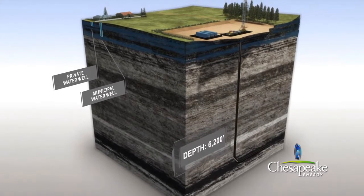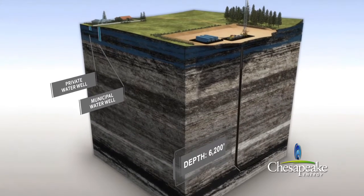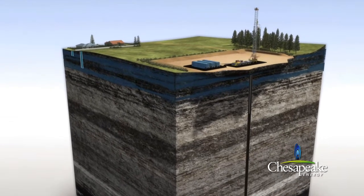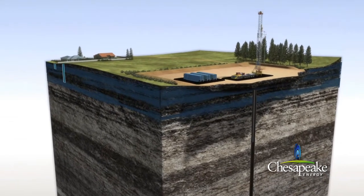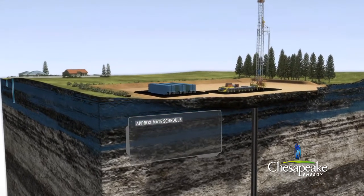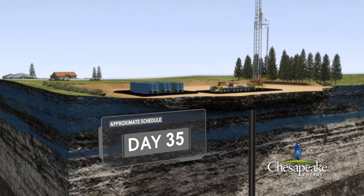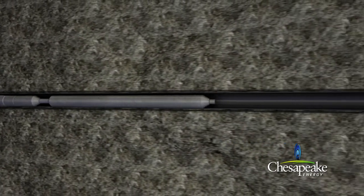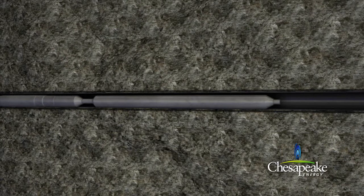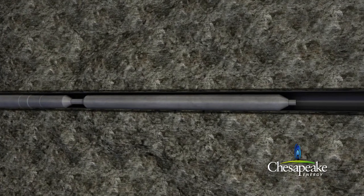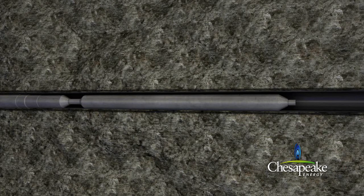In order to maximize the production potential of the well, the shale formation will be hydraulically fractured. In preparation for the fracturing process, the casing will be perforated in the horizontal portion of the well using tubing conveyed perforating guns containing explosive charges. The perforated intervals are spaced approximately 50 to 80 feet apart and create a connection between the production casing and the shale formation.